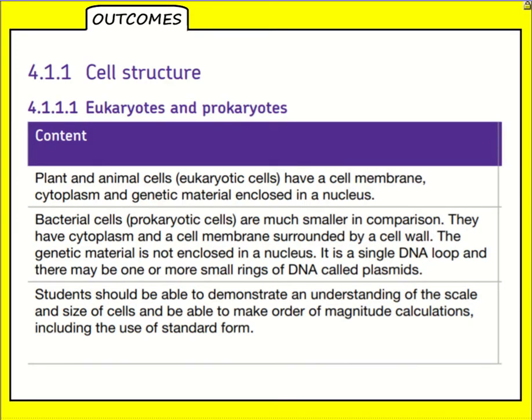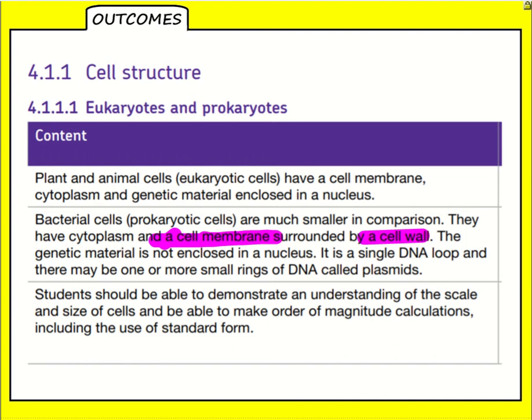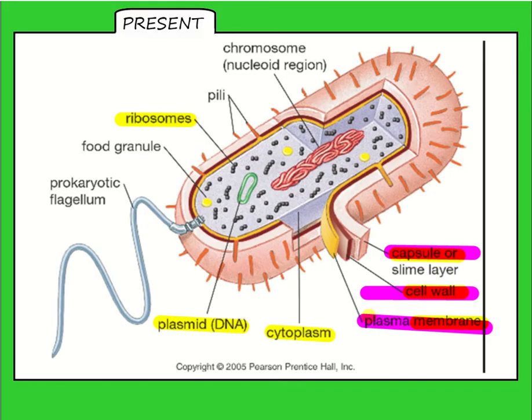Going back to the specification, it states they have a cell membrane surrounded by a cell wall. The capsule layer isn't specifically mentioned in the spec but they often have one — it's a thicker outer layer. The cell wall in a bacterial cell is made of chitin, not cellulose, which is one of the main differences. The cell membrane is semi-permeable and controls substances entering and leaving the cell, while the cell wall provides structure and support.